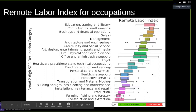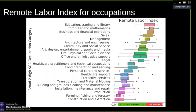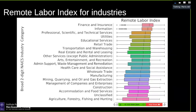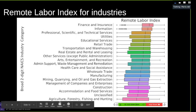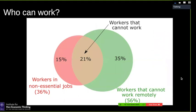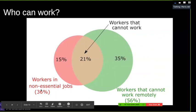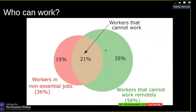Looking at the industry side, finance and information industries can generally be done remotely, while agriculture and accommodation and food services definitely cannot. This serves mostly as a sense check for our index. Coupling what work can be done remotely with what jobs are essential: the essential classification comes from industries; the remoteness measure comes from occupations. Workers in non-essential industries are 36%, workers who cannot work remotely are 56%, and we estimate that workers who cannot work at all are about 21% — this is the supply shock to employment.